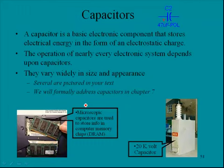Capacitors. To the right here is a schematic symbol for a capacitor. A capacitor is a basic electronic component that stores electrical energy in the form of an electrostatic field. The operation of nearly every electronic system depends upon capacitors, and they vary widely in their size and appearance.